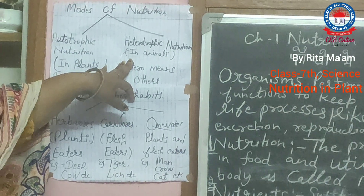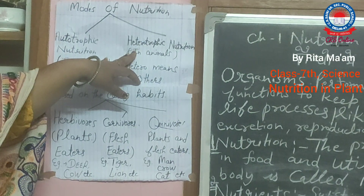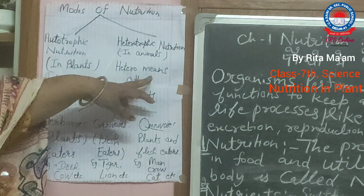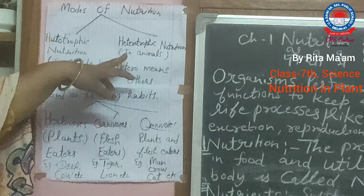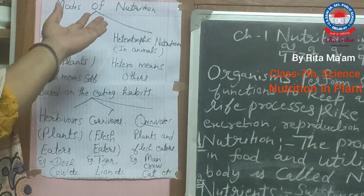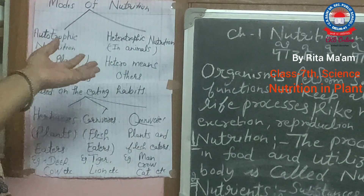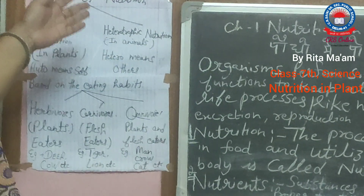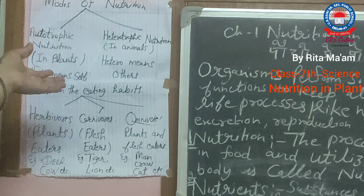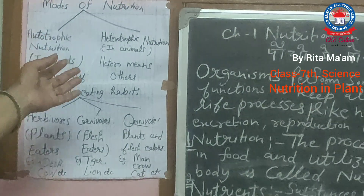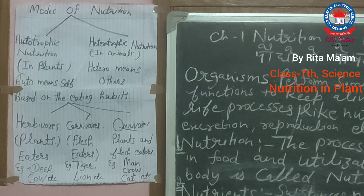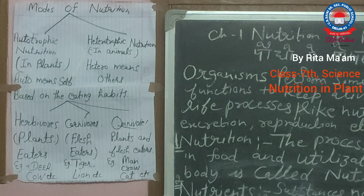Heterotrophic nutrition is the other type of nutrition, carried out by animals. Heterotrophic means 'others' — those which get their food from others. They are dependent for their food on other animals or plants. This type of nutrition is called heterotrophic nutrition.